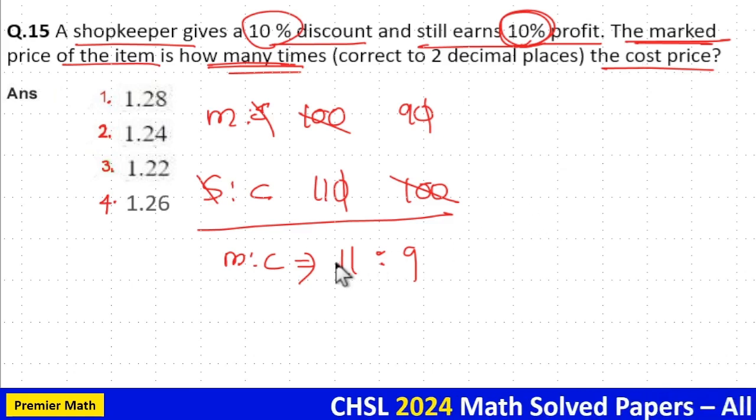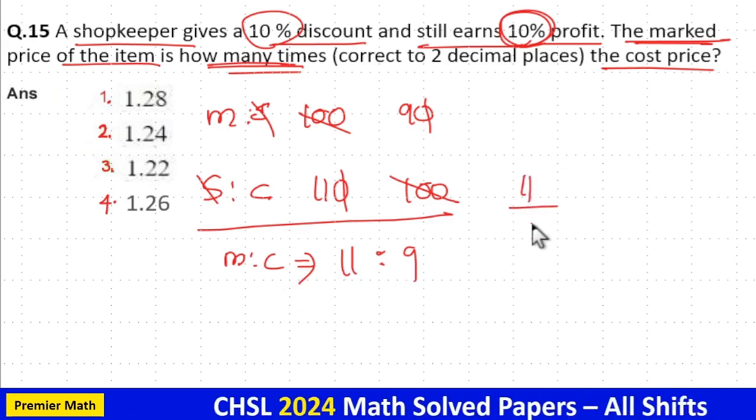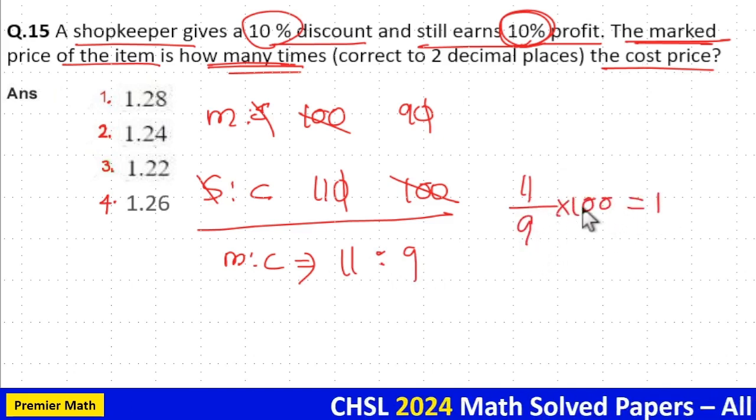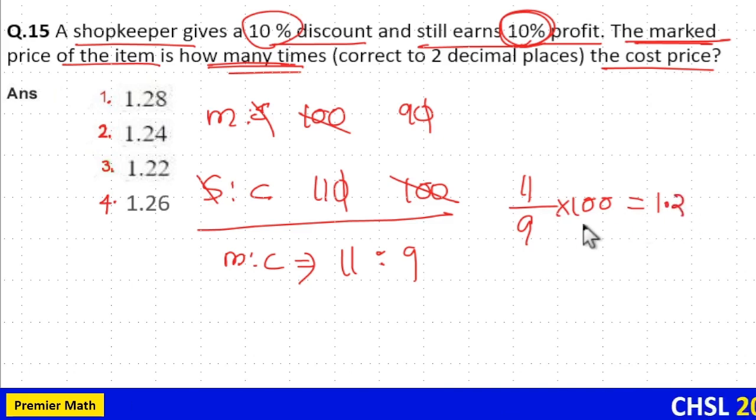Here, marked price is 11, and 11 is how many times 9? So 11 by 9 into 100 is your answer. 9 goes one time in 11, remainder 2. 9 goes two times in 20, remainder 2. 9 goes two times in 20.